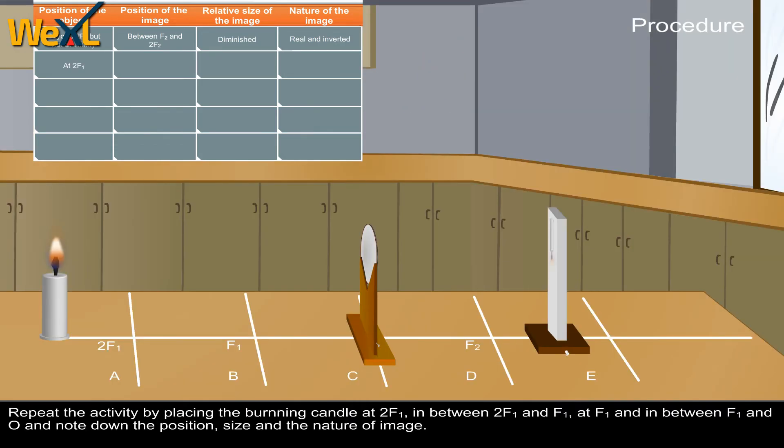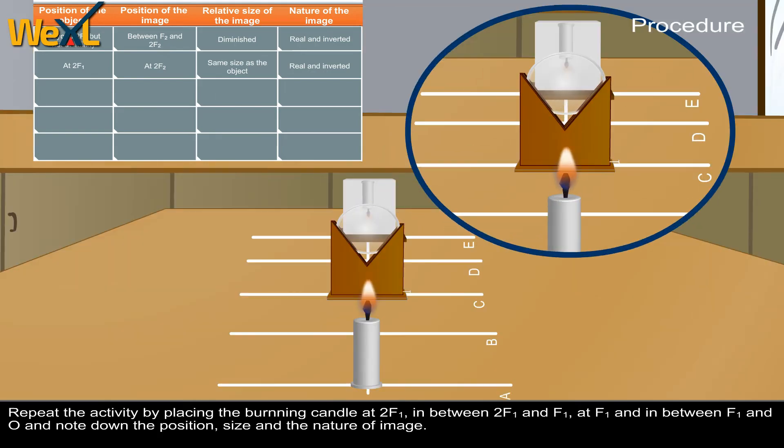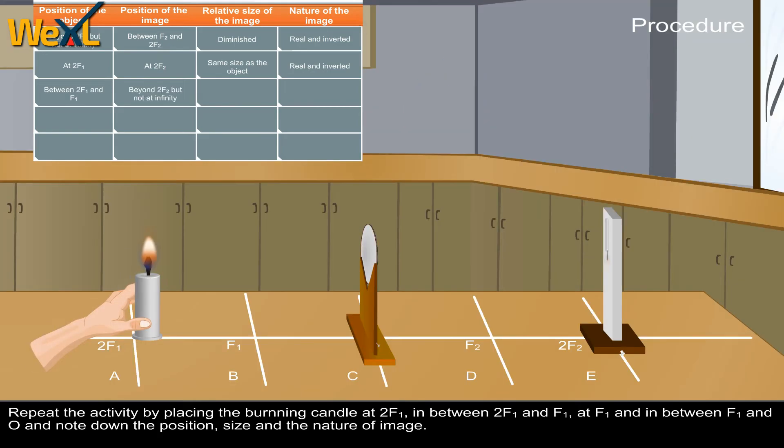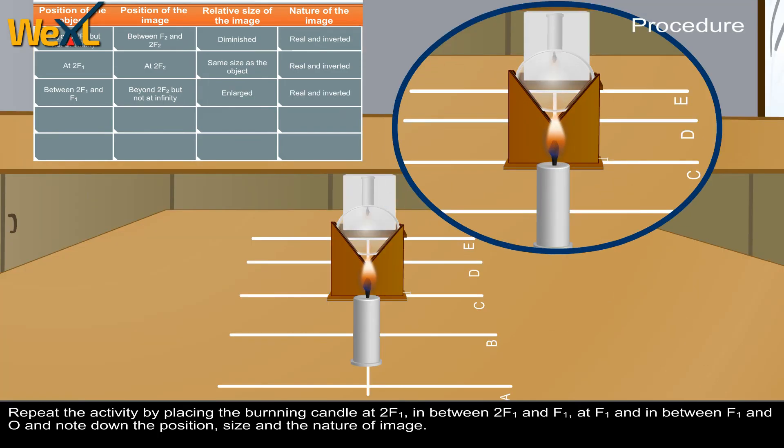Repeat the activity by placing the burning candle at 2F1, in between 2F1 and F1, at F1, and in between F1 and O. Note down the position, size and the nature of the image.